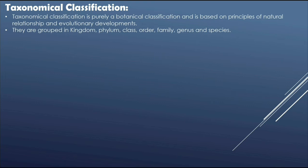They are grouped in kingdom, phylum, class, order, family, genus, and species. The taxonomical classification system uses a hierarchical model to organize living organisms into increasingly specific categories from kingdom to species.